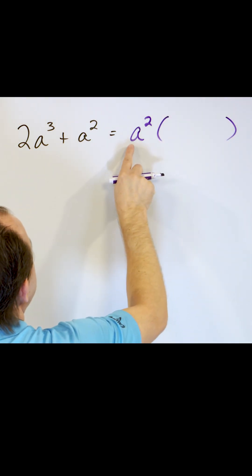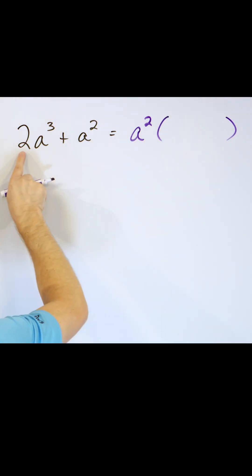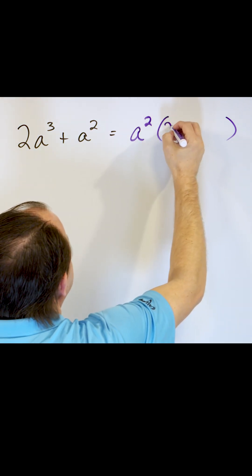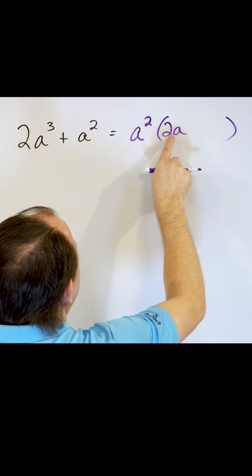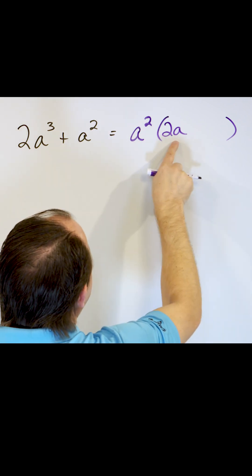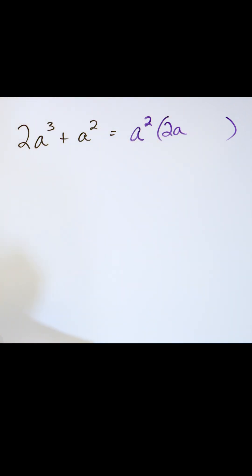Open my parentheses. Now, a squared times something has to give me two a cubed. What has to fit here is two times a, because a squared times this will be two a cubed. You add those exponents, right?